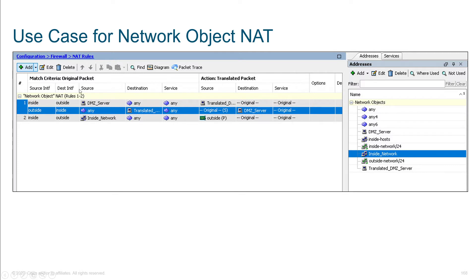What we see here is a source interface and a destination. When traffic is coming from the inside destined for the outside, sourced from the DMZ server, destined anywhere, any service. Think about the match criteria — this is what the packet looks like coming in. Over here, the translated packet is what it looks like going out. Notice the source address is translated to whatever we want to change it to. In this case, the translated DMZ server is the network object referring to that one public IP.